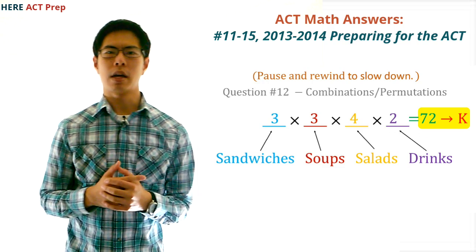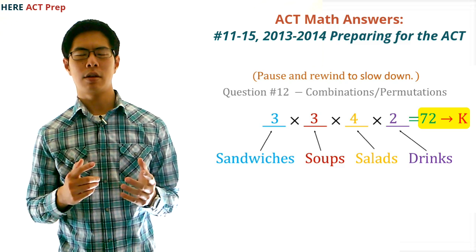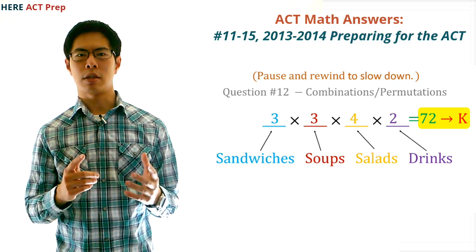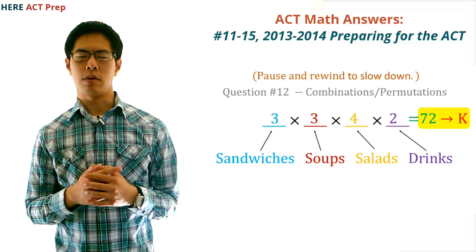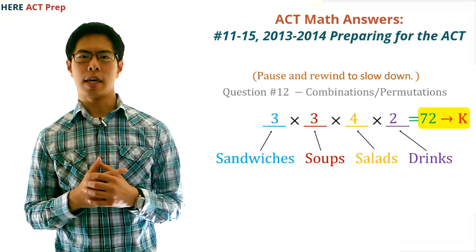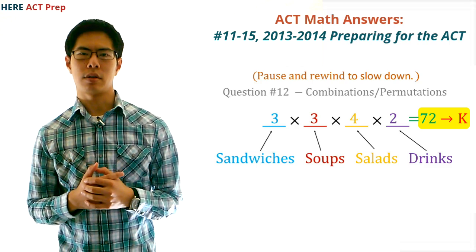Finally, we multiply all of these numbers together: three times three times four times two equals 72. So K is the correct answer.